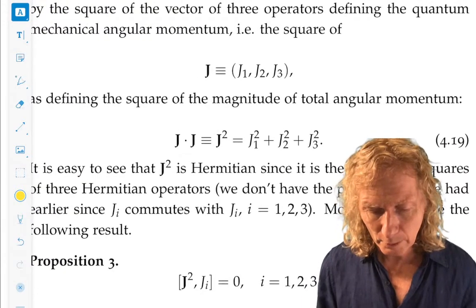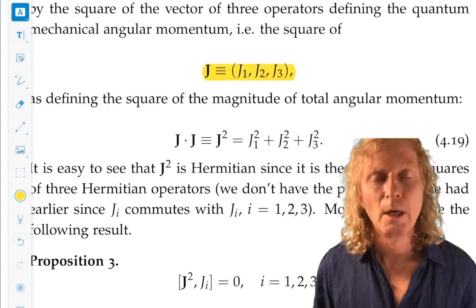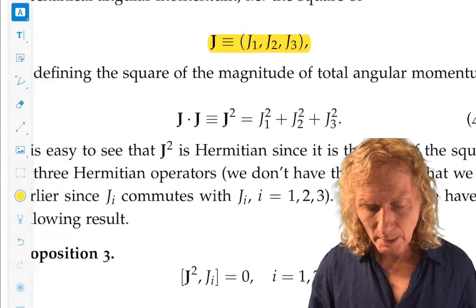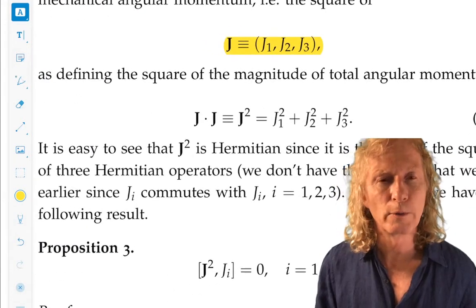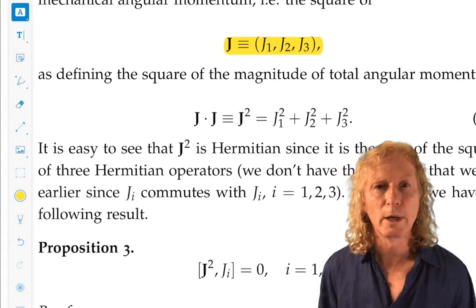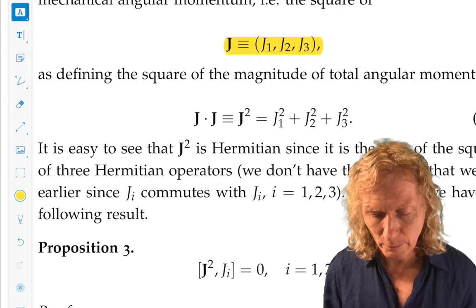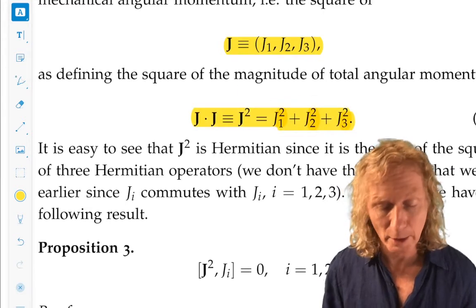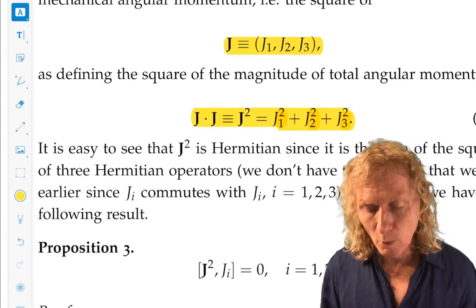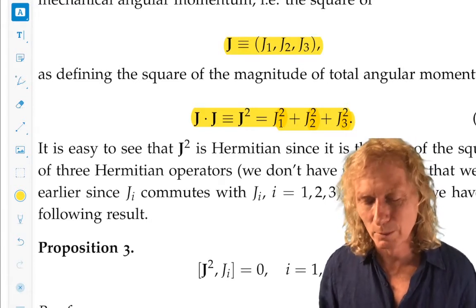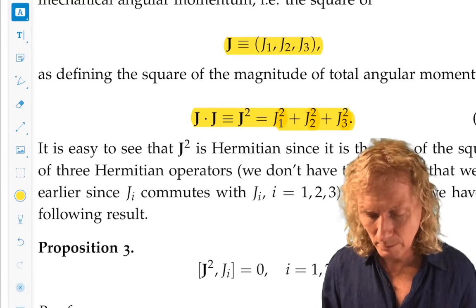So let's look at the vector J, the operator vector. And let's look at what we will refer to as the square of its magnitude. Now, strictly speaking, we need to define what we mean by that. J dot J. It's J1 squared operators now. J1 operating on J1, J2, J2, plus J3, J3.